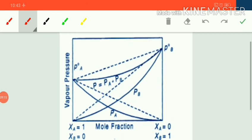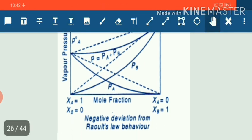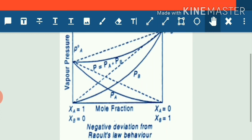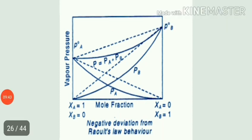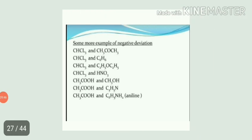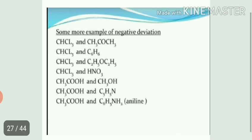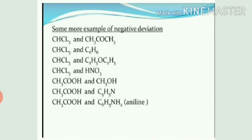Graphically, we represent solutions showing negative deviations where P_total is always less than PA plus PB, shown by a dashed line with respect to ideal behavior shown by a dotted line. Few examples of non-ideal behavior showing negative deviations are: chloroform and acetone, chloroform and benzene, chloroform and diethyl ether, chloroform and nitric acid, carboxylic acid and methanol, and carboxylic acid and aniline.